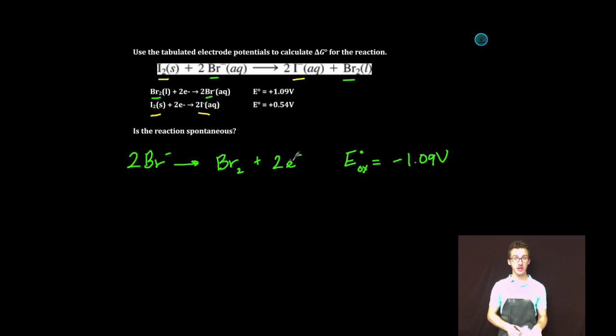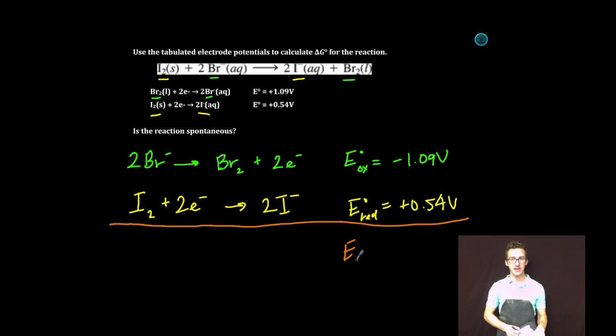So notice here, I've flipped the reduction of bromine to show the oxidation of the bromide ion. Notice as well that for the oxidation potential, I've maintained the value of the reduction potential, but changed the sign. A little easier with the reduction half reaction, because I don't have to worry about flipping anything around, and I don't have to worry about changing my sign. I'm going to sum these together to get the overall cell potential for this reaction, which is negative 0.55 volts.